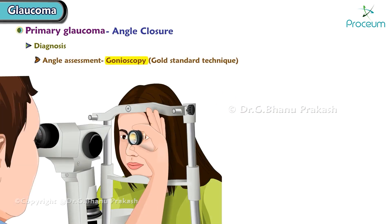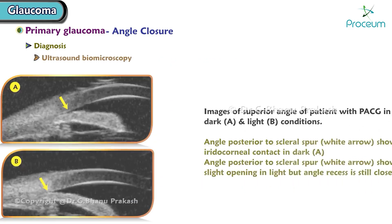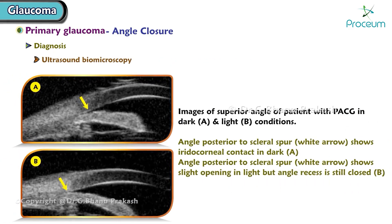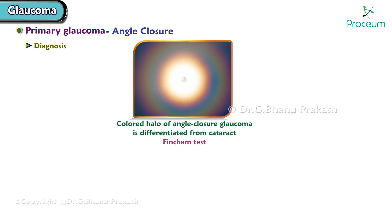Diagnosis: angle assessment is done by gonioscopy, which is the gold standard technique. Van Herick's technique — peripheral depth of anterior chamber less than one-fourth normal cornea thickness — is suggestive of angle closure. Ultrasound biomicroscopy is also used. Colored halos of angle closure glaucoma are differentiated from cataract by the Fincham test.